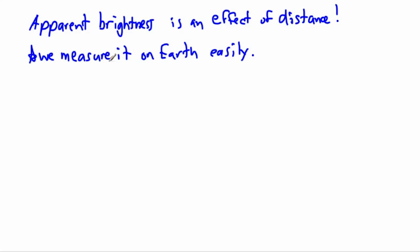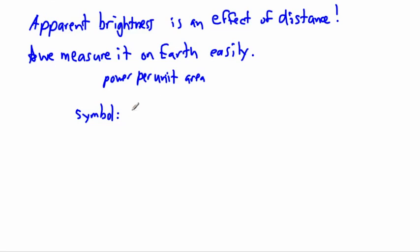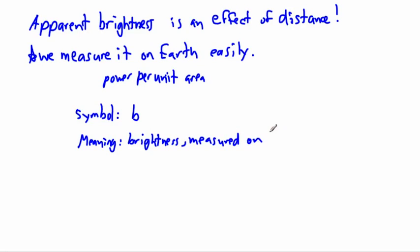The apparent brightness is given by a measurement of power per unit area — in other words, it can be measured in watts per meter squared. The symbol for apparent brightness is written as B. The meaning of this is that it's the brightness measured on Earth, and the units are in watts per meter squared, or equivalently watts times meters to the minus two.